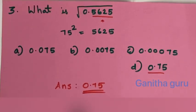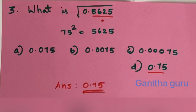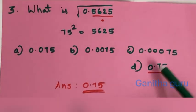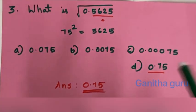Third question: what is the square root of 0.5625? The number has 4 decimal digits, so the square root will have 2 digits. The decimal is 75 squared is 5625. Option D is 0.75. The answer is 0.75, so option D is the answer.